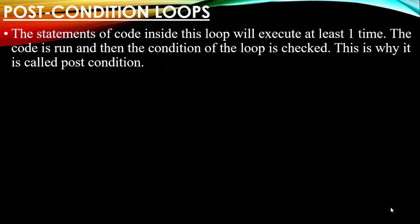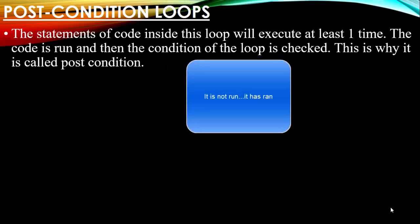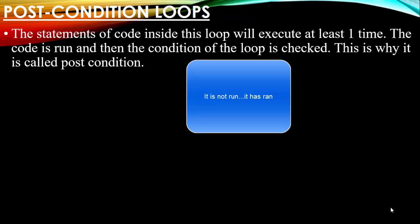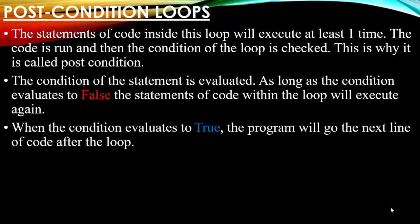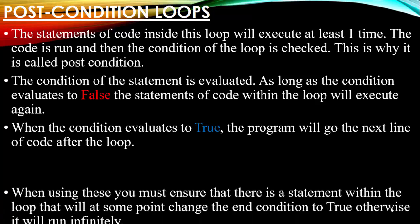The code runs and then the condition of the loop is checked — that's why it's called post condition. The condition is evaluated, and as long as it evaluates to false, the statements within the loop will execute again. When the condition evaluates to true, the program will go to the next line of code after the loop. You must ensure there's a statement within the loop that will at some point change the condition to true.